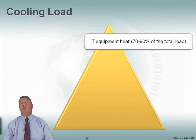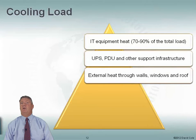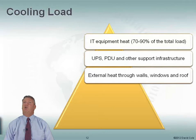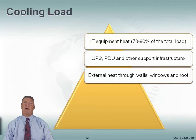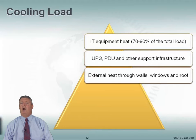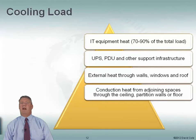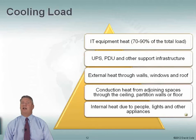We have to know what it is we're cooling. IT equipment makes up a big portion of the load, along with UPSs and PDUs. We might also get external heat through walls, windows, and roofs — it's why we typically don't put a data center on the top floor because of the heat through the roof, and why we typically don't put windows in a data center. We put a data center inside of a building, not against an external wall, so we don't get that heat generation through external walls. And whenever we open up a door to the data center, if it's hotter outside, that heat is going to come in.